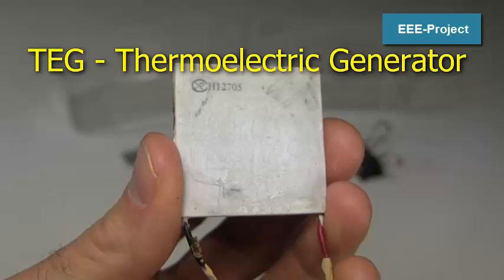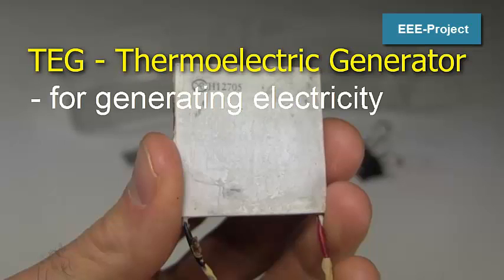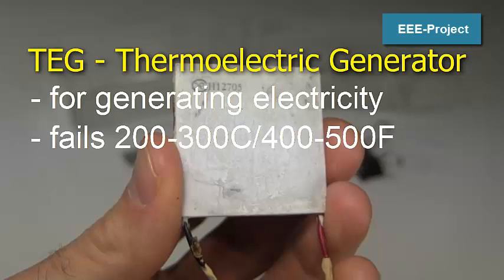For serious electricity generation, you'll want a TEG type, a thermoelectric generator. They can handle up to 200 to 300 Celsius, or 400 to 500 Fahrenheit.